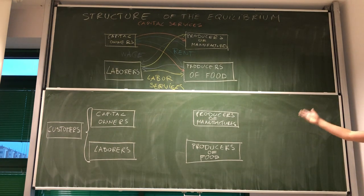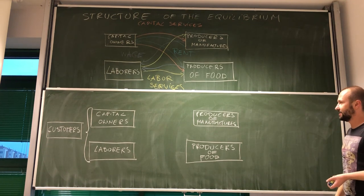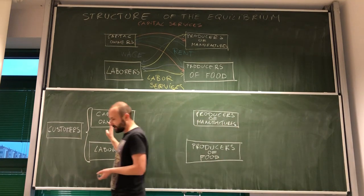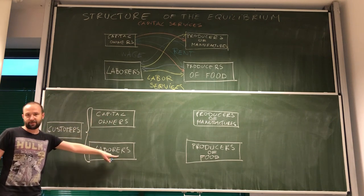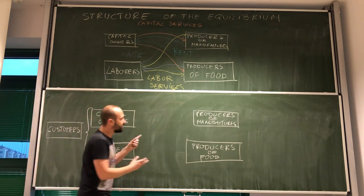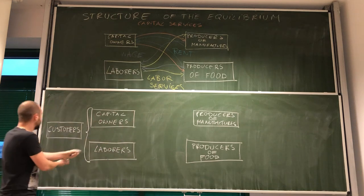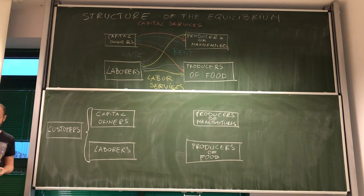But, of course, producers of manufacturers and producers of food want to sell their products. To whom they are selling them? To the customers. And from the perspective of our model, the customers are either the laborers or the capital owners. They are receiving income from labor and capital services, and they can spend this income on food and manufacturers.